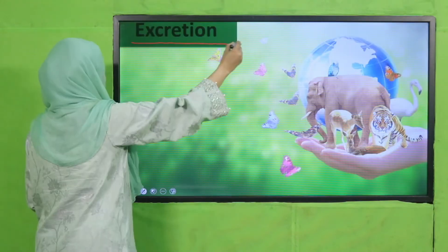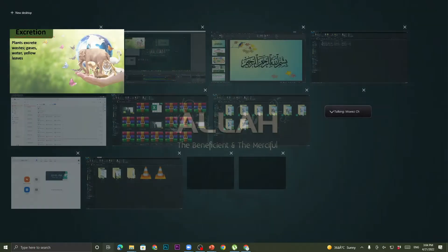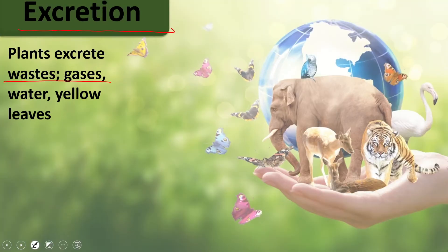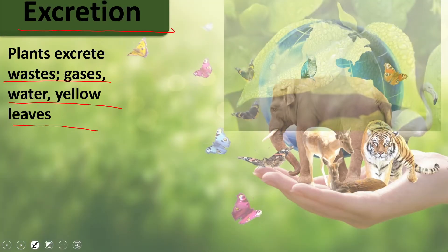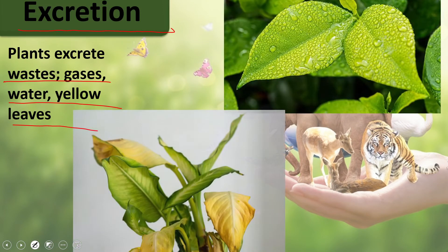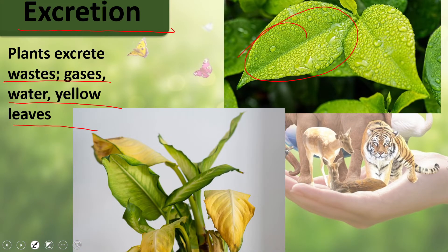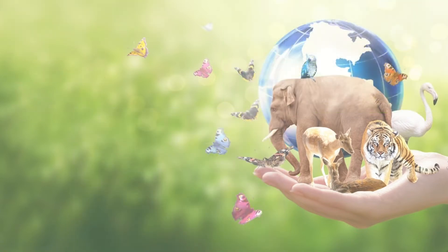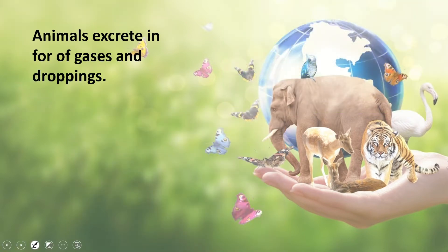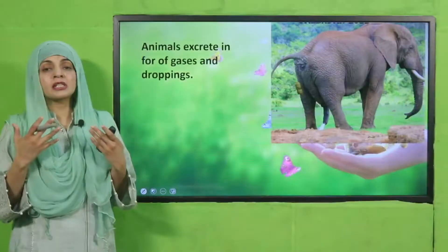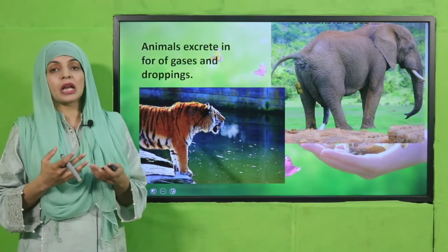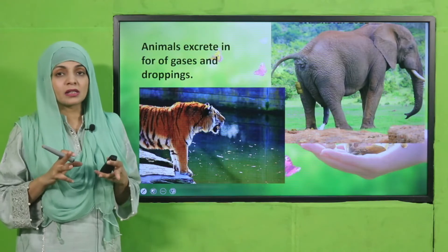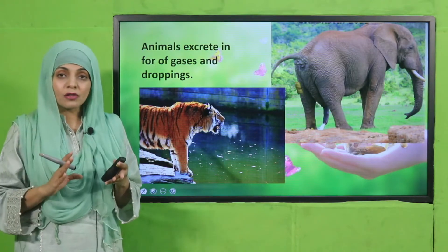For excretion: plants excrete waste gas and water through their leaves. Here you can see evaporation from leaves — this is how waste is removed. When leaves fall off, they also carry waste products of the plant. Animals excrete waste gas — carbon dioxide — out of their bodies, and also excrete through their droppings. These are the two characteristics: sense and respond, and excretion.